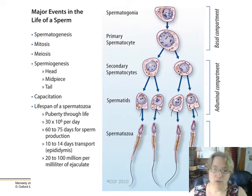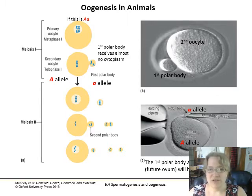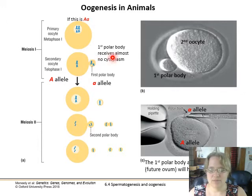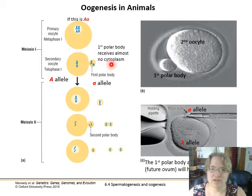This is not the case for egg formation. In oogenesis, or egg cell production in animals, there's not equal division of the cells. During meiosis I, the secondary oocyte is formed, and then half of the DNA is packed into a little tiny polar body — the first polar body — that receives almost no cytoplasm, no mitochondria, and very little of the cellular apparatus.